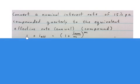The formula that we use is 1 plus I effective equals brackets 1 plus I NOM over M bracket to the power of M, M being how many times the interest is compounded in a year.